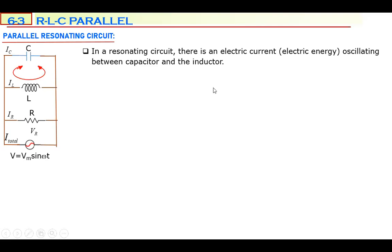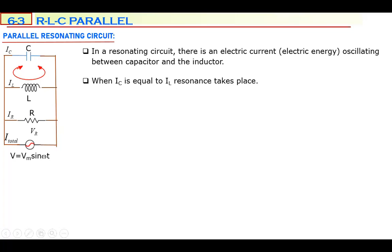There is a condition for electric current to oscillate between C and L. This condition is: if IC and IL are equal, these two currents are equal, then resonance and oscillation between C and L take place. This is a ministry exam question: which of the following is the condition for resonance in an R-L-C parallel circuit? IC is equal to IL.